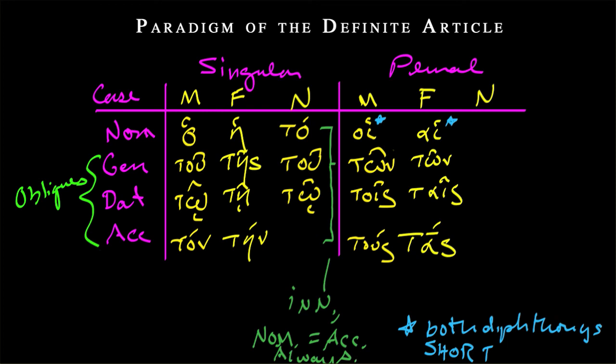This is a handy trick. So if it's to in the nominative, you can be sure that it will be to also in the accusative for the neuter.